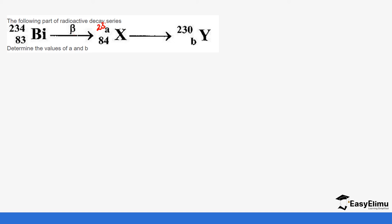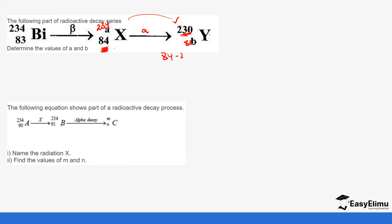Since it's a beta particle, the mass number is going to remain the same and the atomic number is going to increase by one. Looking at the next product, the mass number is decreasing by four, which tells us that an alpha particle is being emitted. So we subtract two from 84 to give us an atomic number of 82.